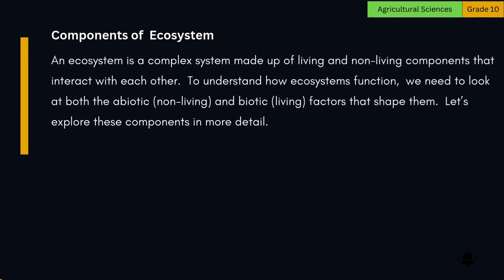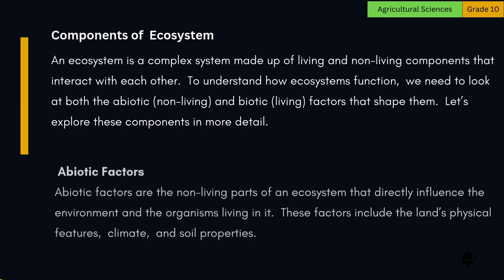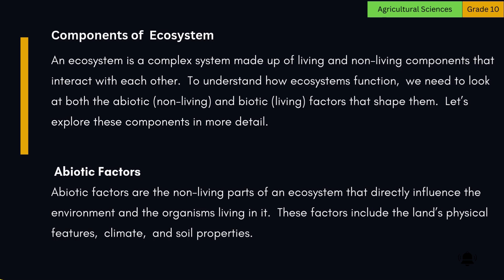Components of Ecosystems: An ecosystem is a complex system made up of living and non-living components that interact with each other. To understand how ecosystems function, we need to look at both the abiotic (non-living) and biotic (living) factors that shape them. Abiotic factors are the non-living parts of an ecosystem that directly influence the environment and the organisms living in it. These factors include the land's physical features, climate, and soil properties.